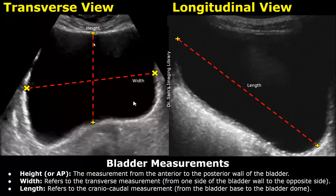After that, you can measure the width of the bladder. Place one caliper at the bladder wall in this manner, and the other caliper at its opposite side, and you will get the width. This will be the transverse measurement.